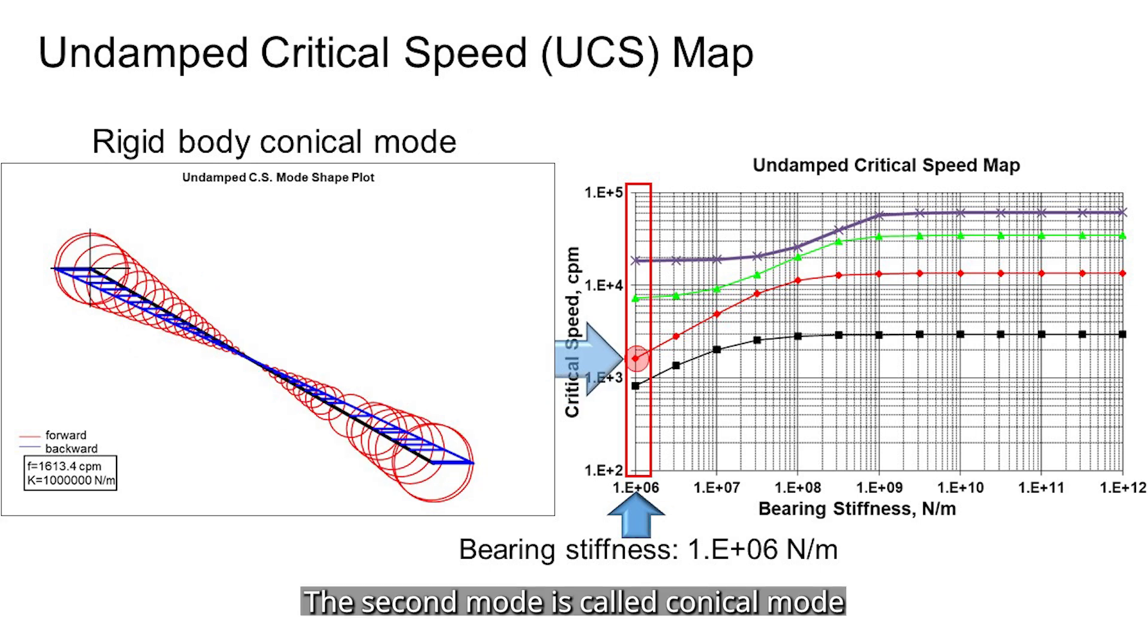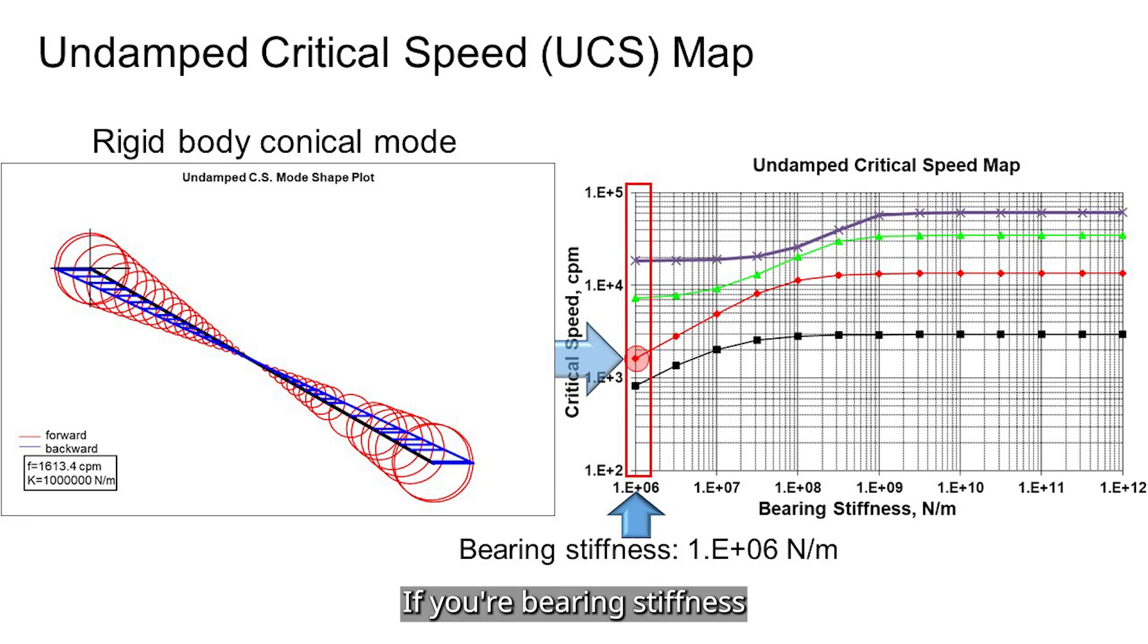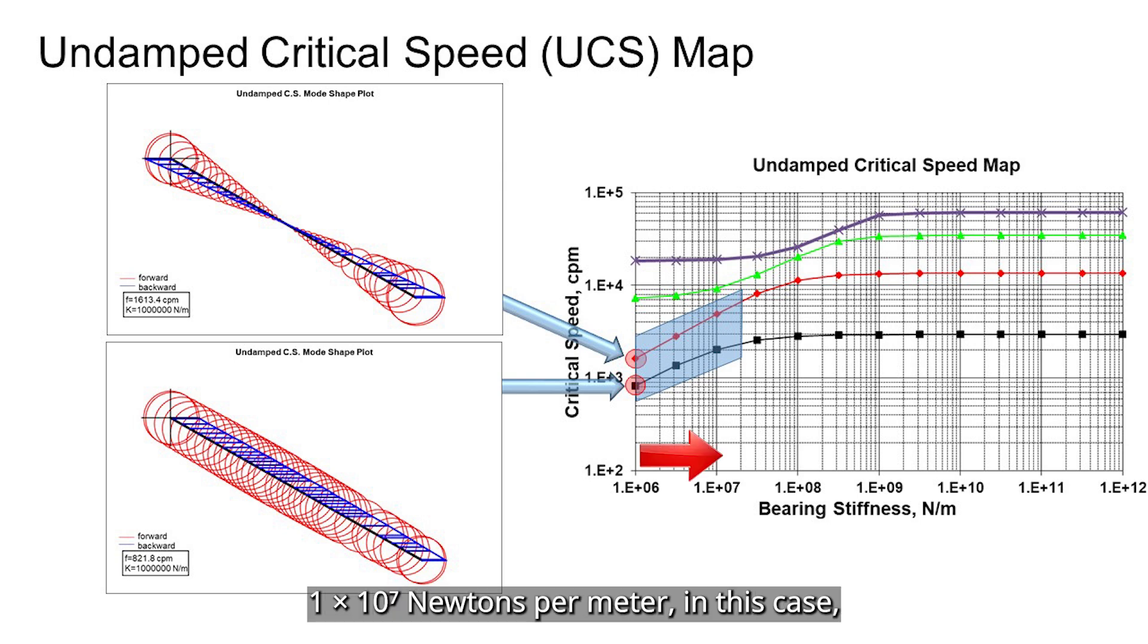The second mode is called conical mode, or the rocking mode. In this case, the ends of the shaft move out of phase, which means one goes up while the other goes down. If your bearing stiffness is anywhere from small up to around 10 to the 7th newtons per meter, in this case, these two rigid body modes show up as straight lines on the map.